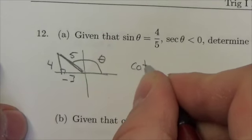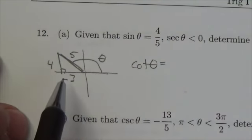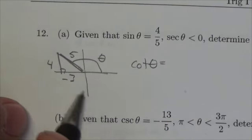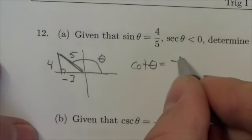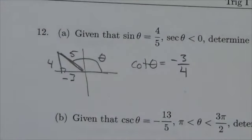So the value of cotangent of that particular angle, now let's think about this. Cotangent, okay, not like tangent. Tangent is y over x. Cotangent is x over y. So this is going to be negative three over four. That's the ratio that they're looking for.